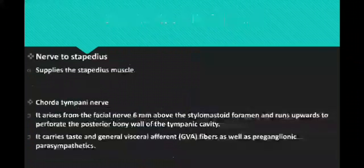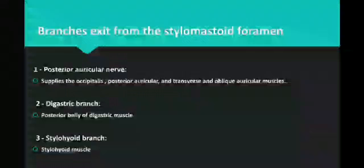The nerve to stapedius supplies the stapedius muscle. The chorda tympani nerve arises from the facial nerve 6 mm above the stylomastoid foramen, runs upward to perforate the posterior wall of the tympanic cavity. It carries taste and general visceral afferent fibers as well as preganglionic parasympathetic fibers.